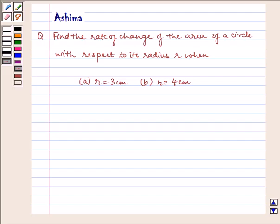Hello and welcome to the session. Let us understand the following question which says: find the rate of change of the area of a circle with respect to its radius r when (a) r equals 3 cm, (b) r equals 4 cm.